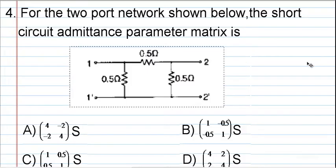The question is: for the two-port network shown below, the short circuit admittance parameter matrix is... The figure is shown.